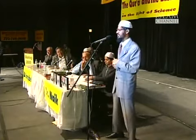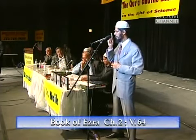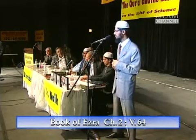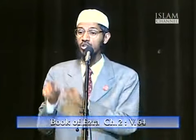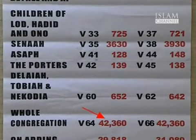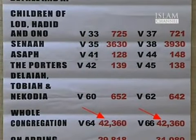Further, it's mentioned in Ezra chapter two, verse 64, that the total congregation, if you add up, comes to 42,360. And in Nehemiah chapter seven, verse 66, the total is also the same — 42,360.